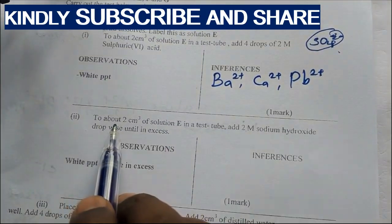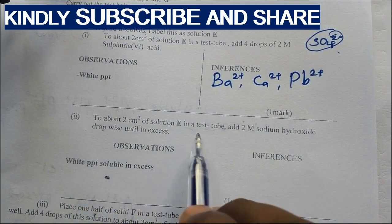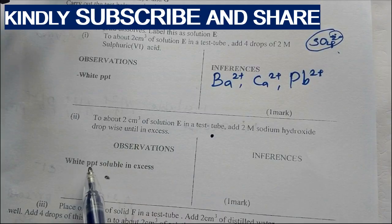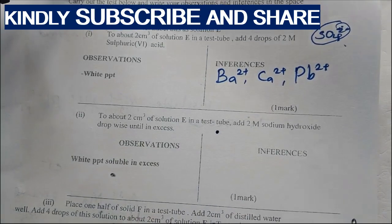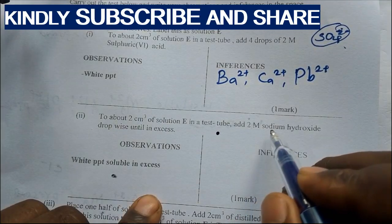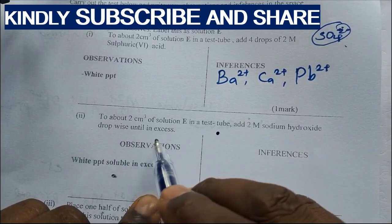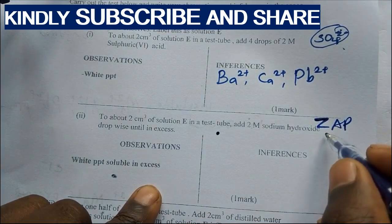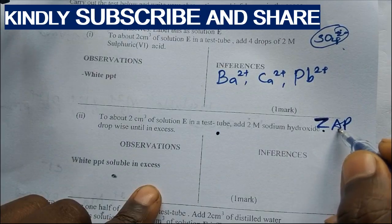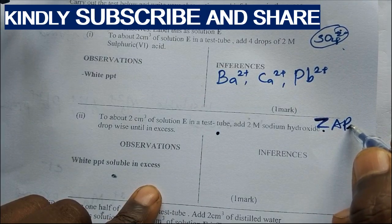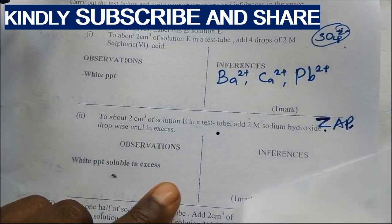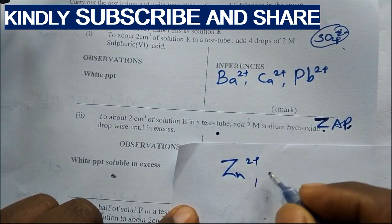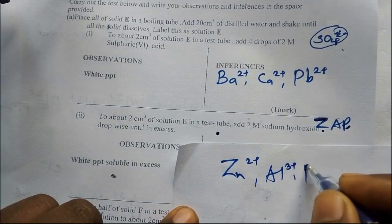To about 2 cm³ of solution E in a test tube, add 2 molar sodium hydroxide dropwise until in excess. A white precipitate is soluble in excess. Now here, we know that if we are adding the reagent sodium hydroxide, then a white precipitate is formed soluble in excess. We know ZAP is present. ZAP stands for zinc ions, aluminum ions, and lead ions. But now a student who grams things without understanding would now here write zinc 2+ ions, aluminum 3+ ions, and lead 2+ ions present.